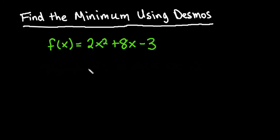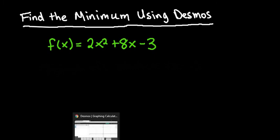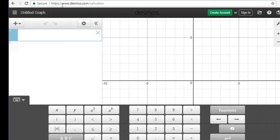So what we're going to do is enter this equation 2x squared plus 8x minus 3 into the website. Let me go ahead and pull up my browser. Like I said, you can google Desmos the graphing calculator.